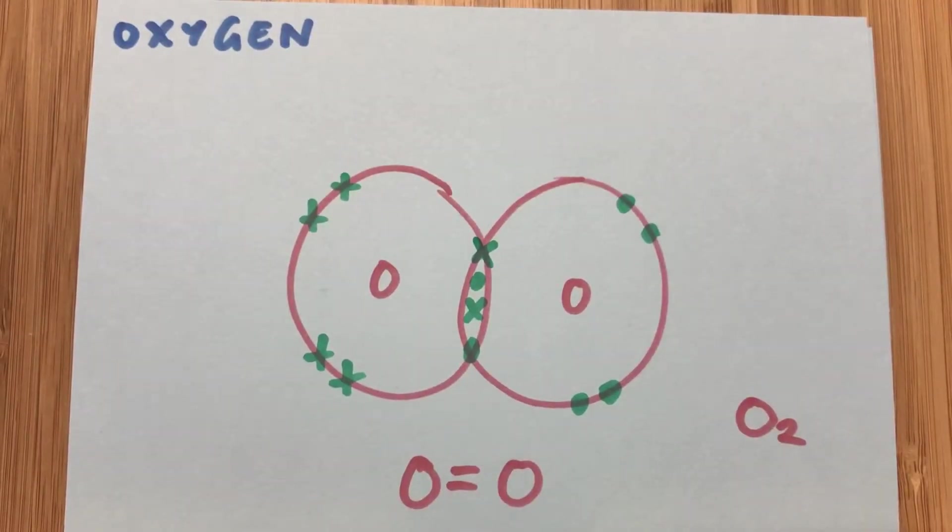So now we're looking at oxygen. Oxygen being in group six. So six electrons in the outer shell of electrons. And we've got the atom on the left represented with six electrons as six crosses. And the atom on the right represented as six dots as the six electrons in the outer shell of that atom.